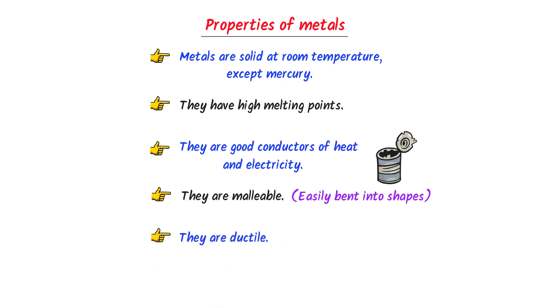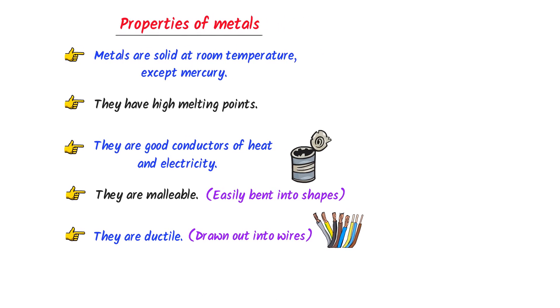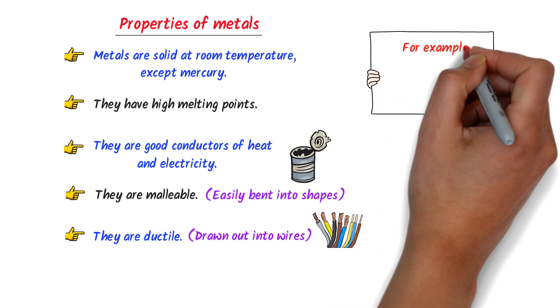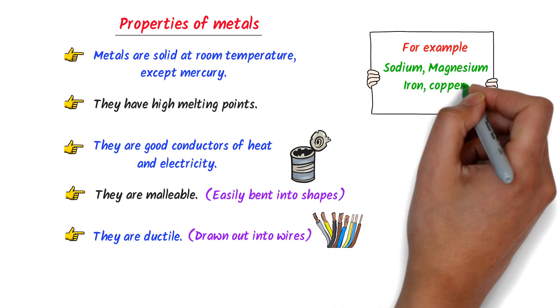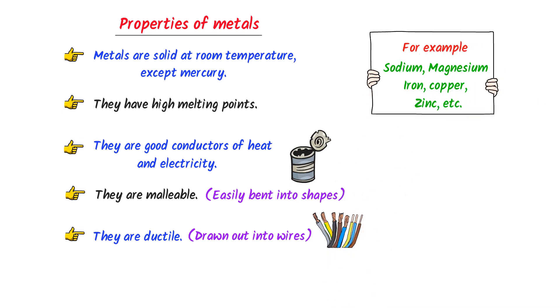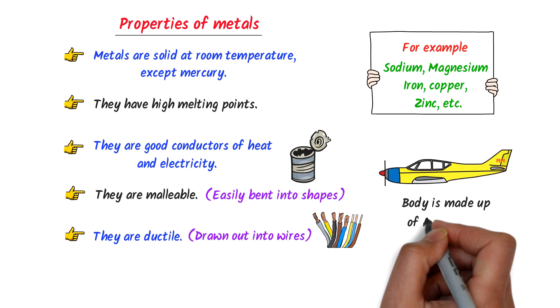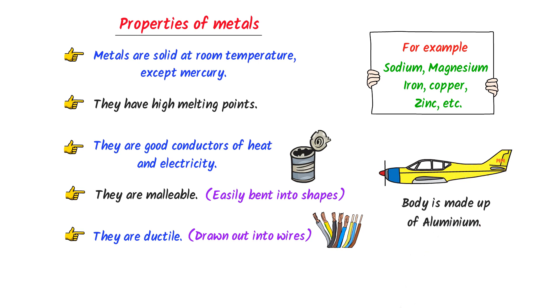Fifthly, metals are ductile. It means that they can be drawn out into wires. For example, sodium, magnesium, iron, copper, zinc, etc. are all metals. In our daily life, the body of airplane is made up of aluminium, and aluminium is a metal. So these are the 5 common properties of metals.